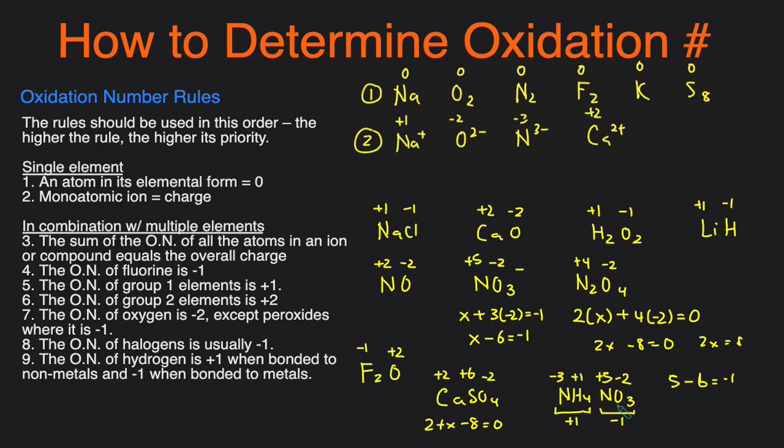That's how you determine the oxidation numbers of elements. It's easiest to think of the rules in two categories: individual elements versus elements in combination. Depending on your professor or teacher, you'll either need to memorize these rules or have them on the test. In a future video we'll go over more examples to reinforce these rules. If you want to learn how to ace chemistry — study tips and exam tricks — head over to www.conquerchemistry.com/chemsecrets for a free guide: 12 Secrets to Ace Chemistry. Link is in the description below.